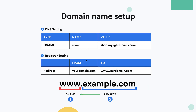Your settings for the main domain will look like this. You need to set a DNS record with the type CNAME, the name www, and the value shop.mylightfunnels.com. And then you need to set up a redirection from yourdomain.com to www.yourdomain.com. The redirection will depend on the company that you're using for your domain name. Each company has a different user interface, so you just need to find the setting for your redirection. Sometimes it's called domain forwarding.